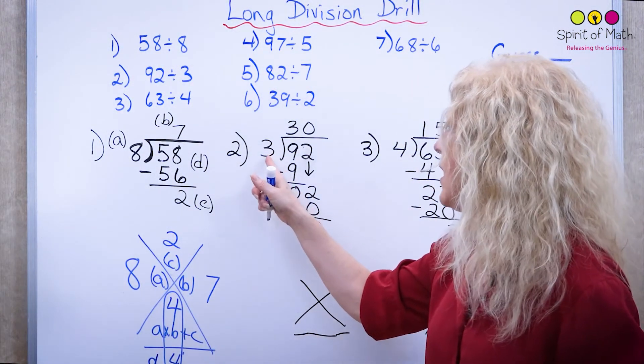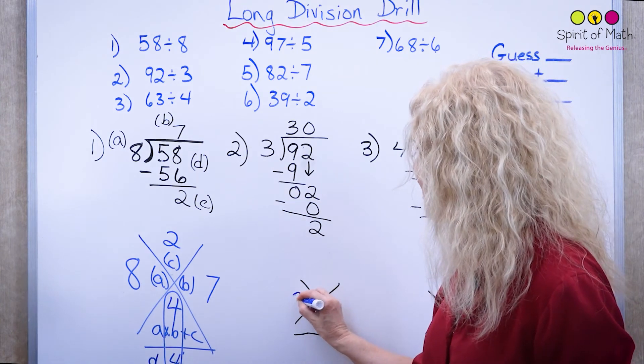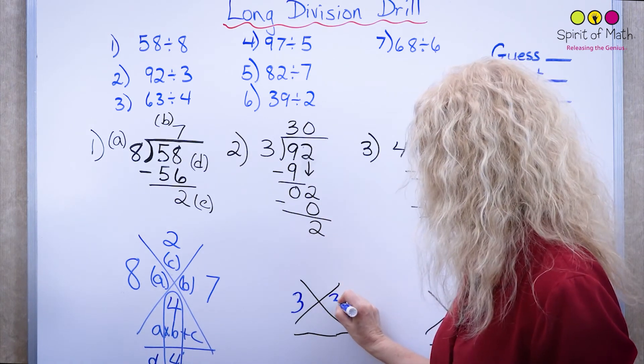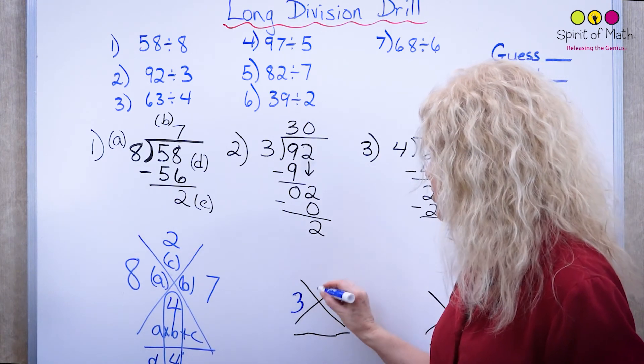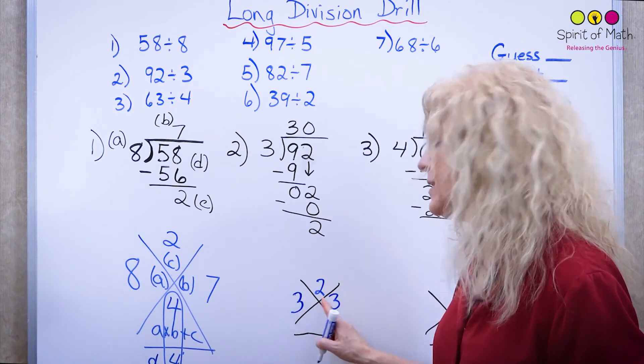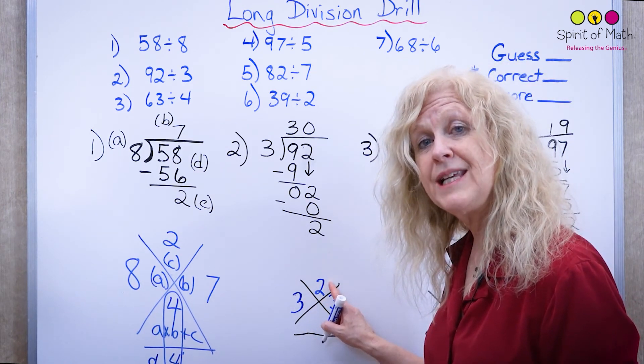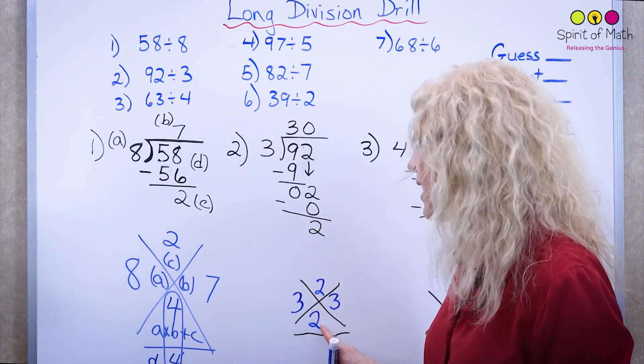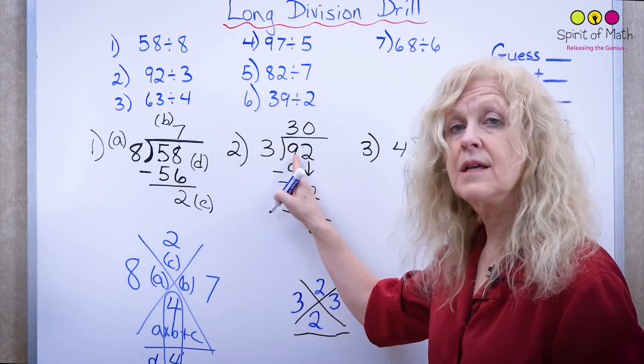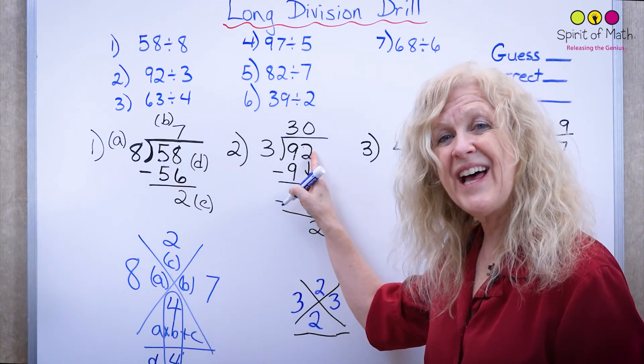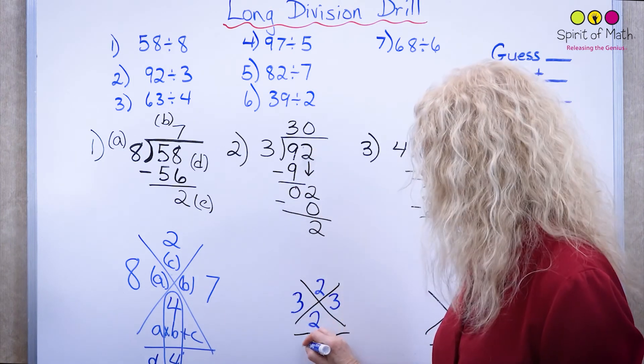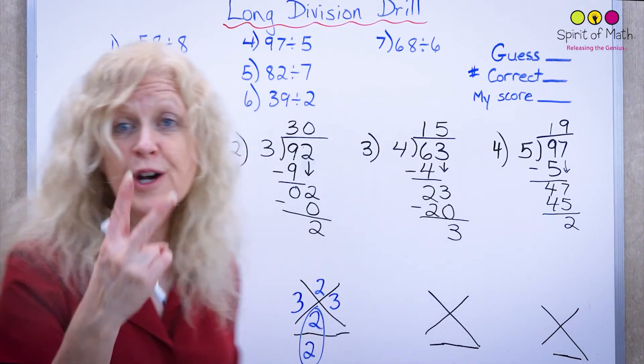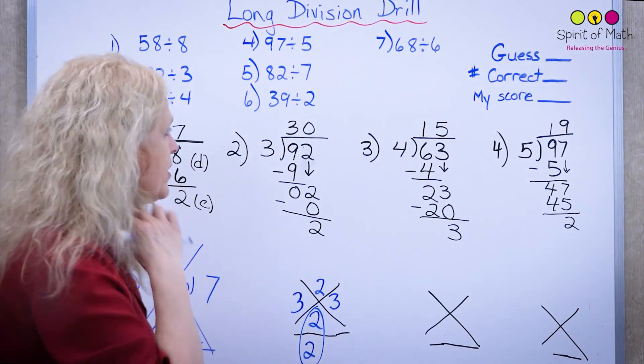So in this case, you have three times 30. Well, the digital root of 30 is three, plus you've got the two at the bottom here. Three times three is nine, plus two is 11. One plus one is two. So there's the answer for that part. Now you have to take this. Nine plus two is 11. One plus one is two. Those digital roots are the same. It works. So we probably got two questions right.